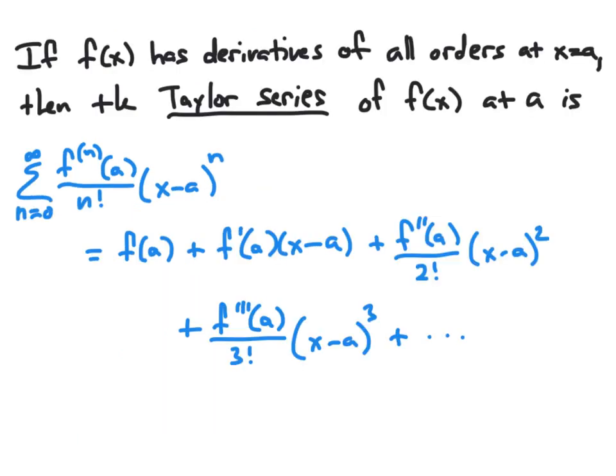Given a function f, the power series with these coefficients cₙ is very important and is given a particular name: the Taylor series of f at the value a. It's written as the sum from n equal to zero to infinity of the nth derivative of f evaluated at a, over n factorial, multiplied by x minus a to the nth power. Written out in terms, this equals f of a plus f prime of a times x minus a, plus f double prime of a over 2 factorial times x minus a squared, plus f triple prime of a over 3 factorial times x minus a cubed, and so forth.